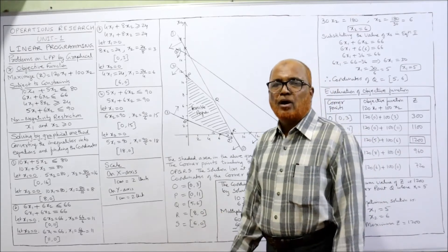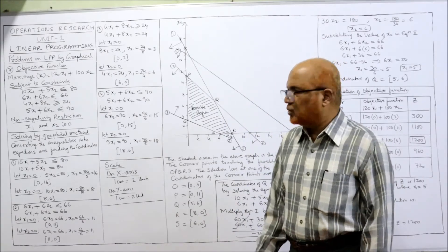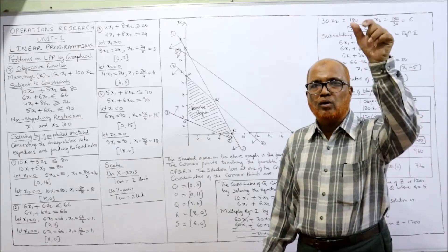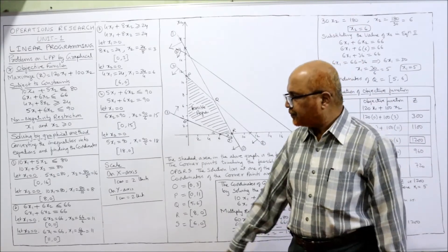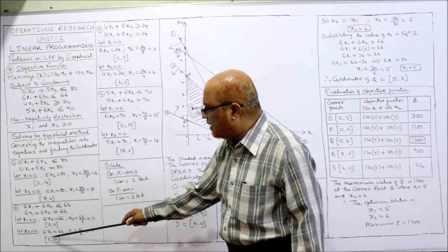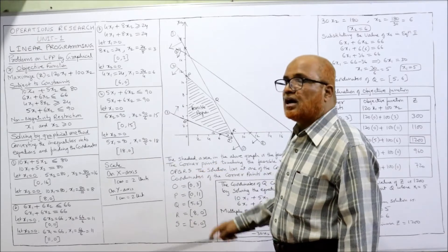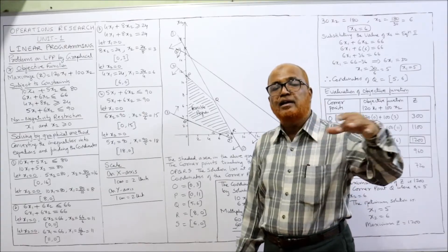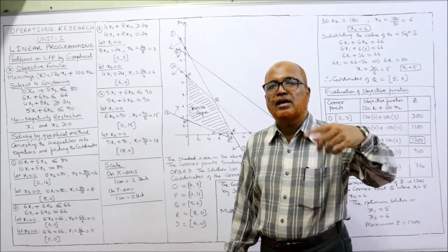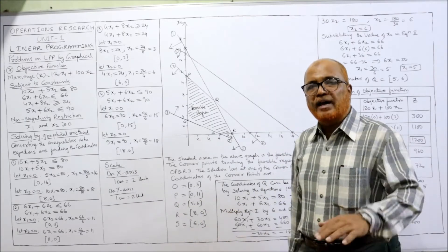Now we determine the scale — how many units per centimeter. On the x-axis we take x1, on the y-axis we take x2. The x1 values are 0, 8, 11, 6, and 18. The highest value is 18. We cannot take 1 cm equal to 1 unit because we would need 18 cm, which is not practical. So we take 1 cm equal to 2 units, so that in 9 cm we can adjust 18 units. On the x-axis: 1 cm equals 2 units.